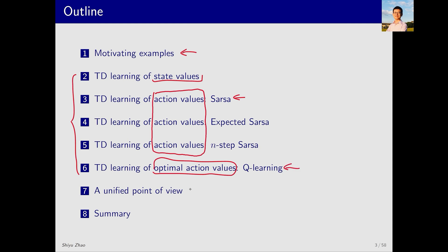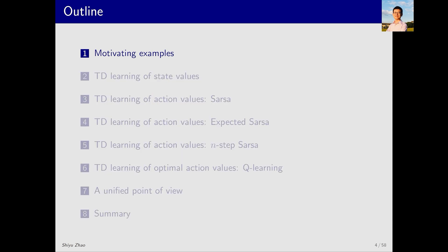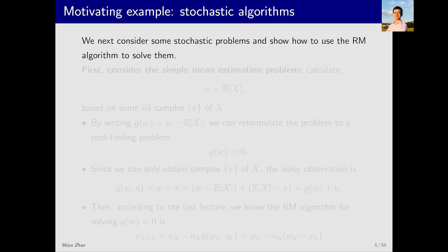Afterwards, we will compare these algorithms to see their similarities and differences. Finally, I will provide a summary. Now, let's move on to the first part, the motivating example. In this section, we will consider a few examples and use the RM algorithm we learned in the last lecture to solve these examples. The purpose of these examples is to establish a connection between the previous lecture and this lecture. When you learn the TD algorithms later, they will not seem abrupt and you will understand why the TD algorithms look the way they do. However, this part is not mandatory. If you are eager to start learning the TD algorithms right away, you can skip it.